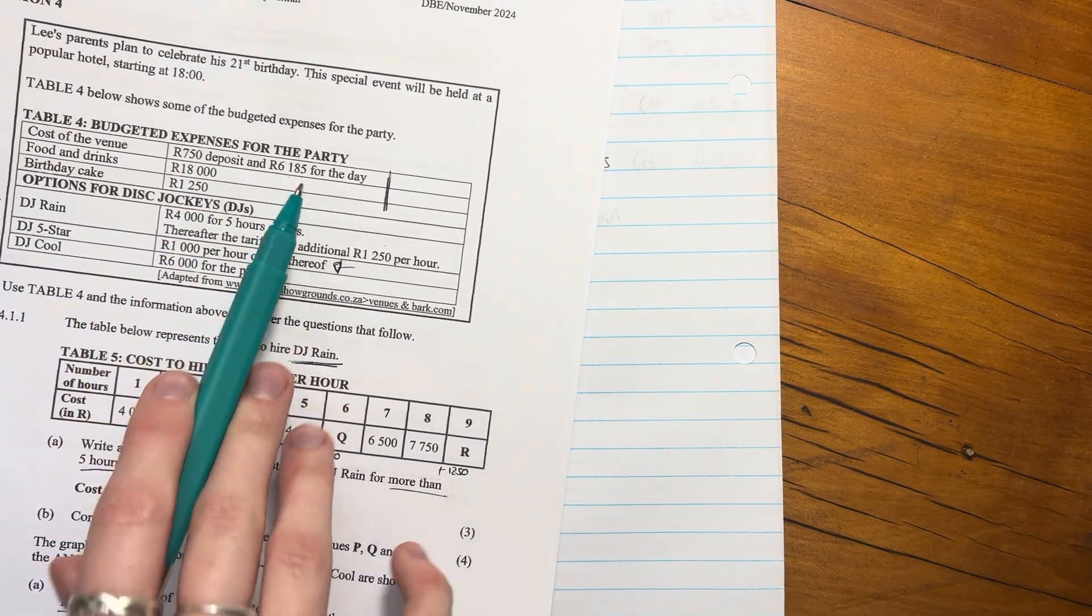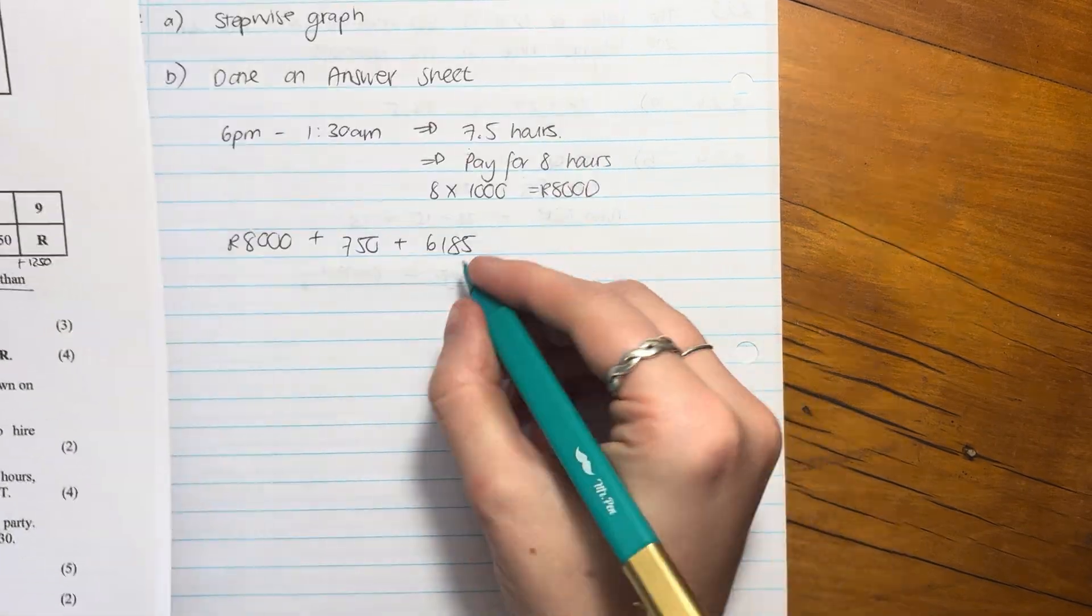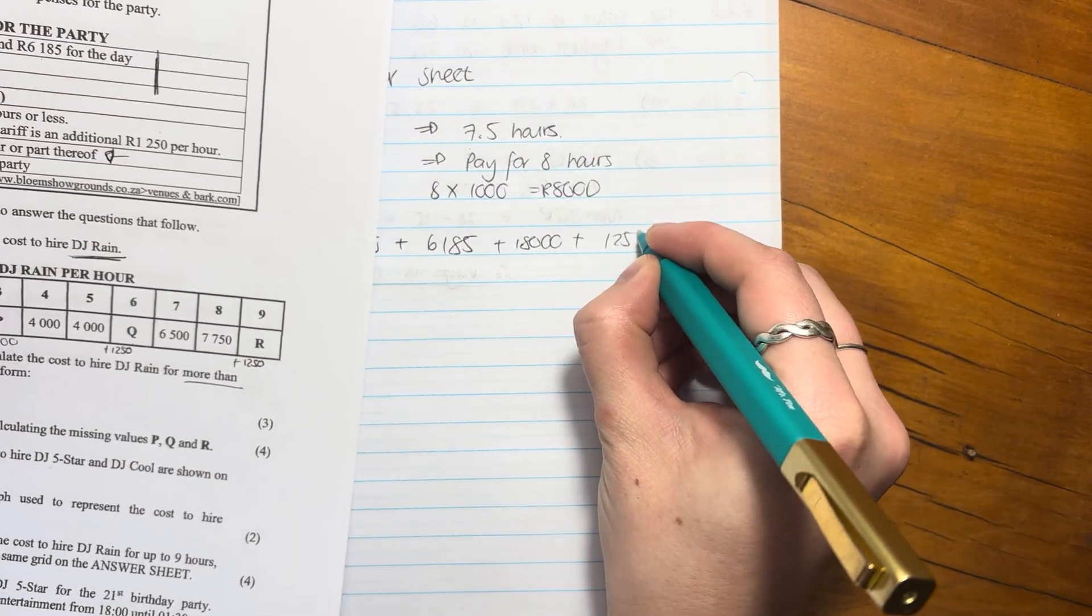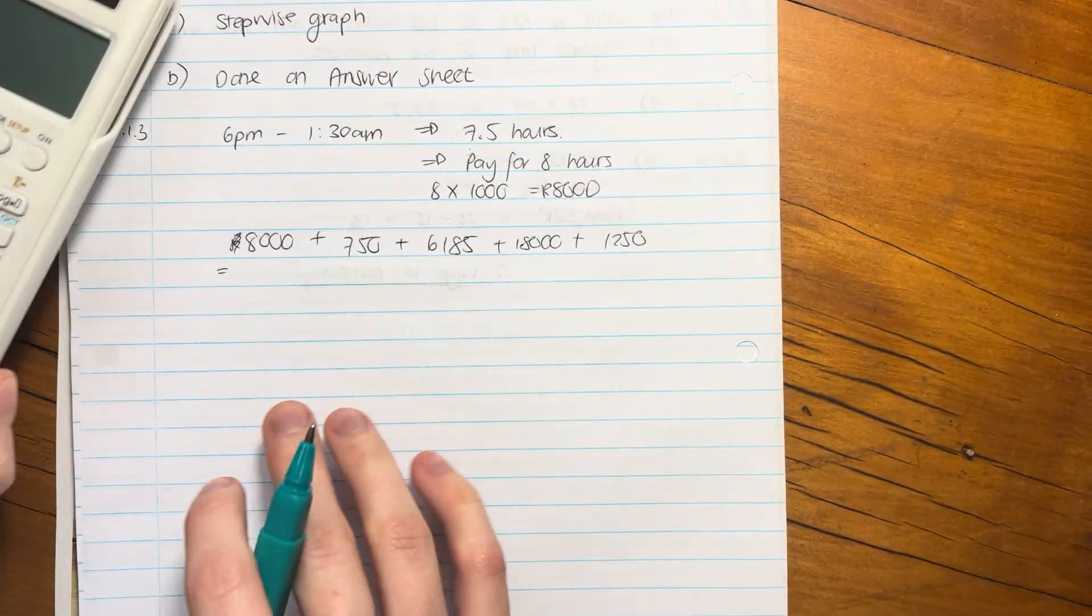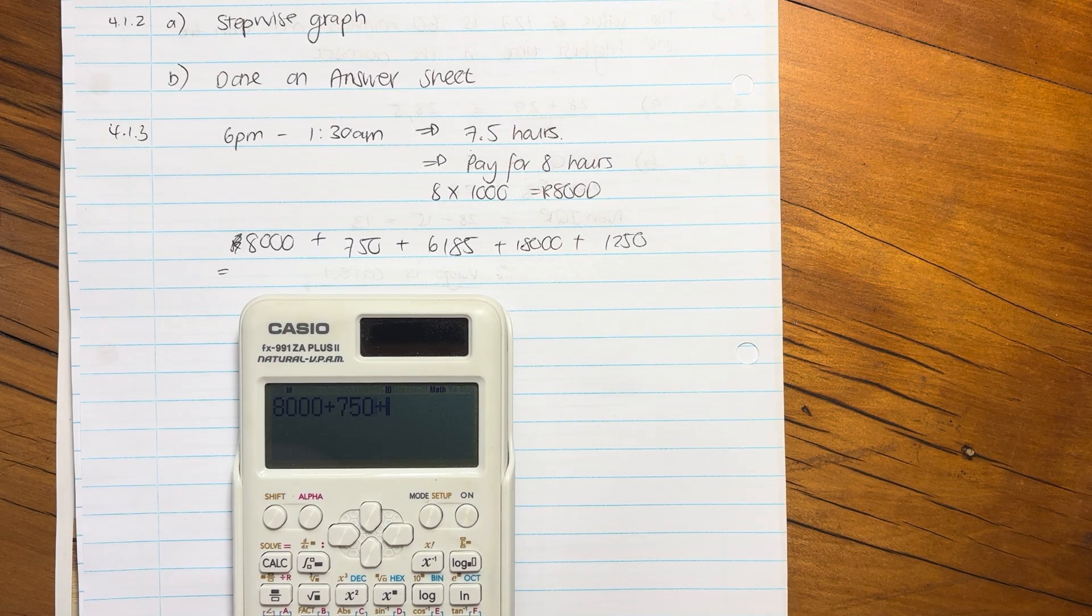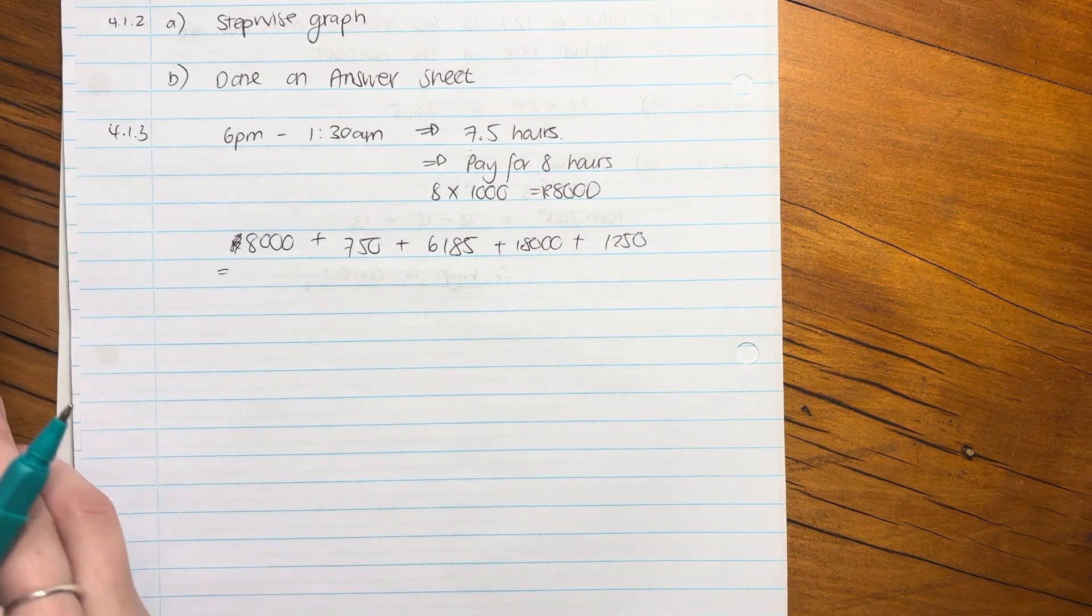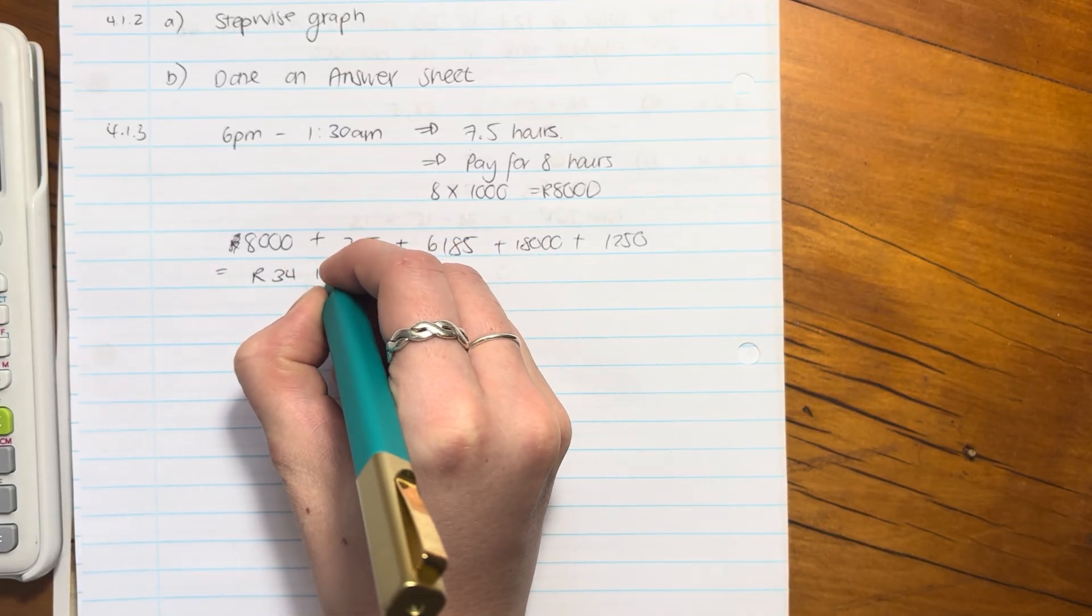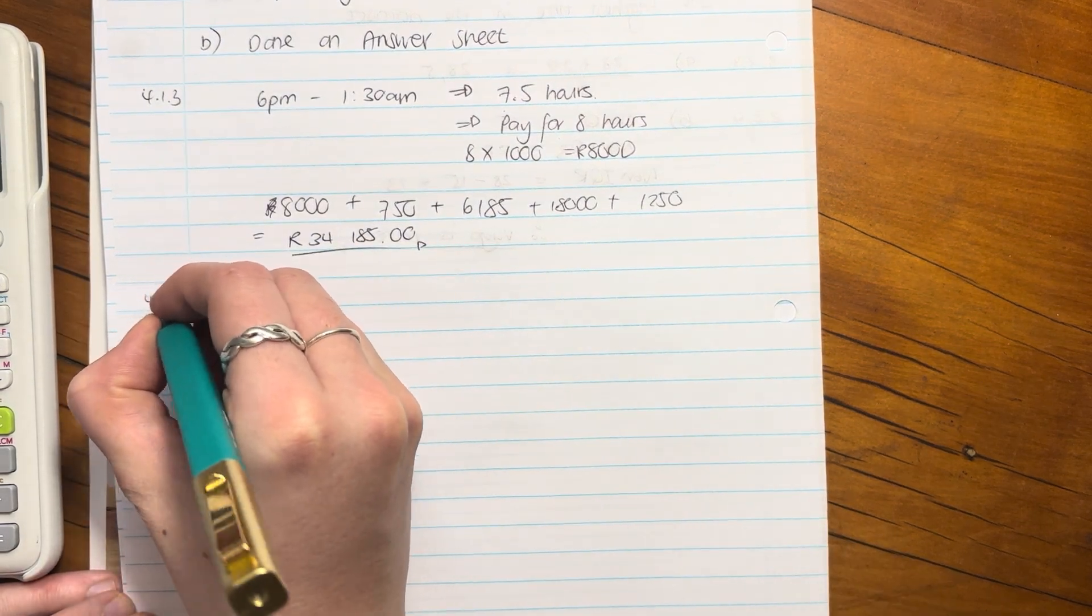But the question asked determine the total budgeting expenses for the party. So now we have to say there's my DJ, what about all these other things? There's the deposit and on the day, food is 18,000, and then birthday cake is 1,250. We're going to add all of these together. Remember that's one of the biggest areas that students make mistakes. Add that up and it is 34,185 rand. And that's the total budget for this party.